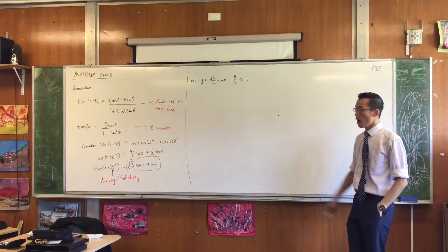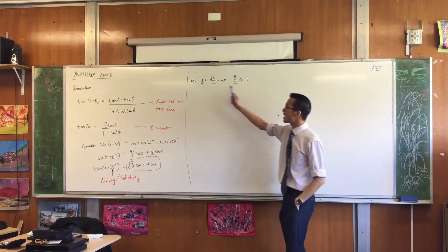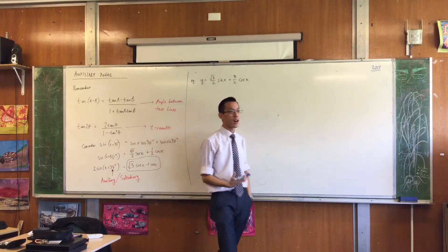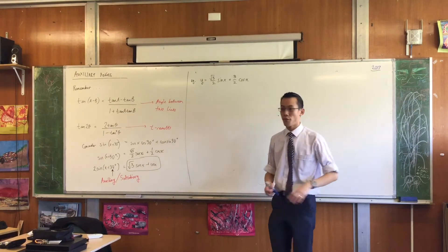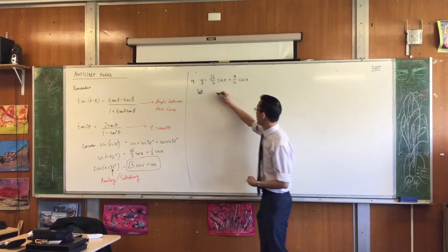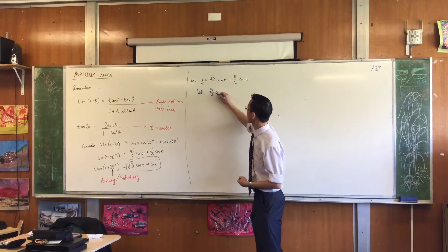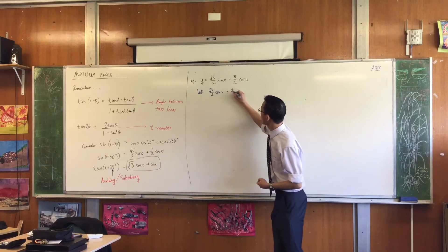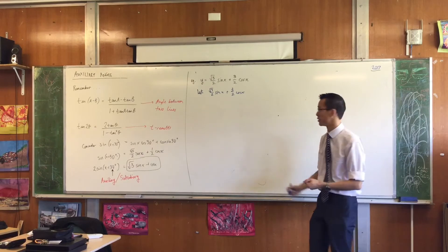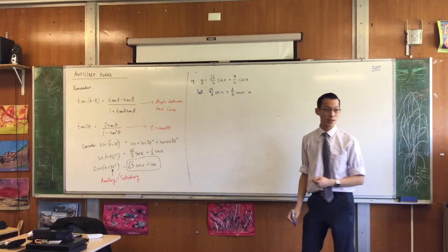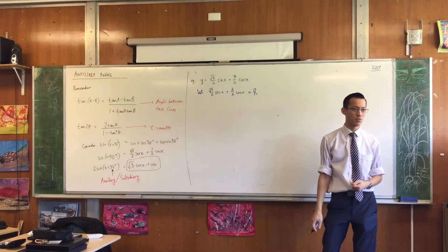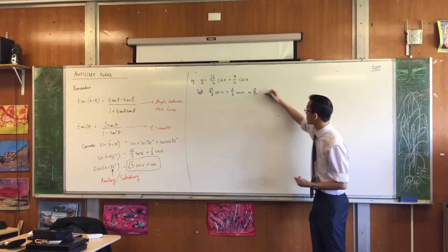I'm going to compare it. I know that this will happen in some way, I just don't know what the amplitude or the phase are. So therefore I'm going to say let this thing here, this √3/2 sin x + 3/2 cos x, I know it should end up as a single trig function. I'm just going to give that trig function a name. I don't know what its amplitude is. By convention, we use the capital letter R sine.